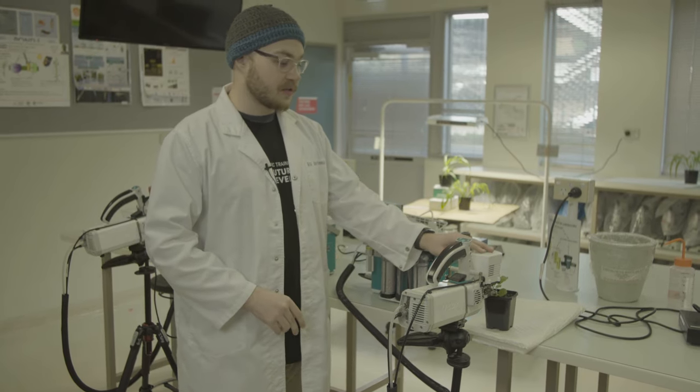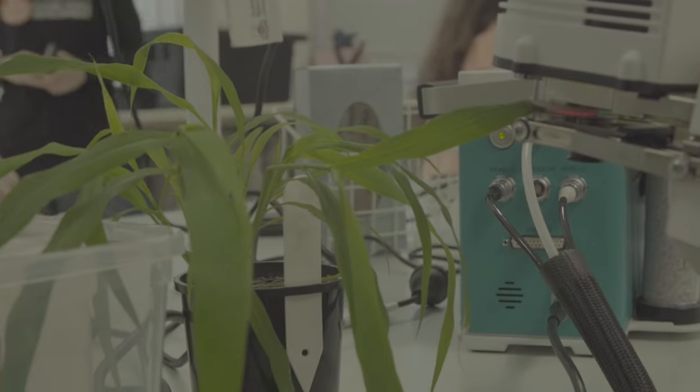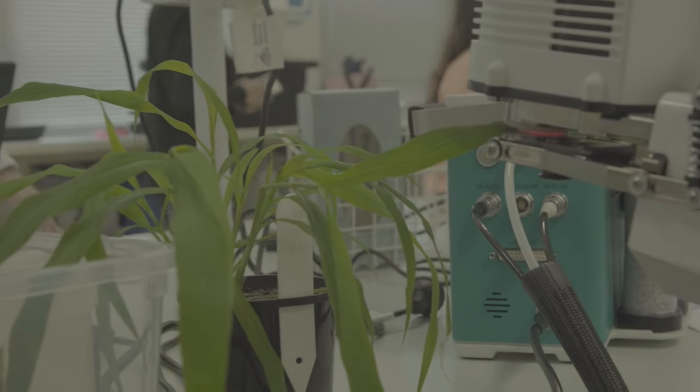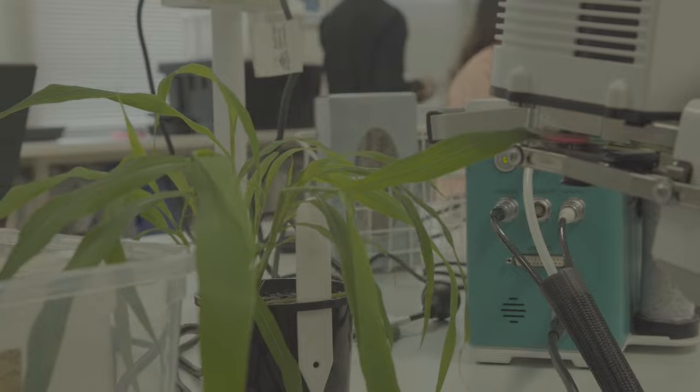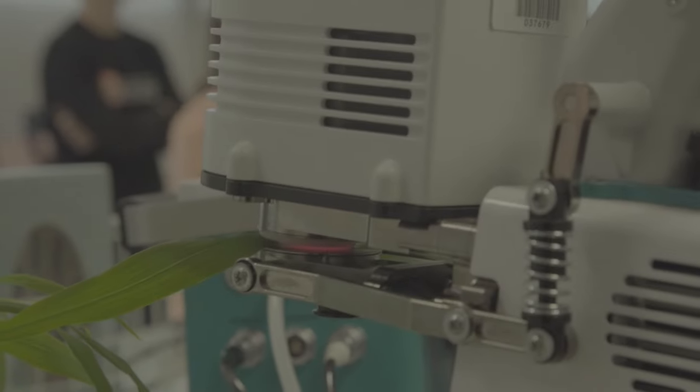And then finally, the head source. So this is where we shine light onto the plants. So with all three of these, we can then create a controlled environment to test CO2 assimilation of plants.